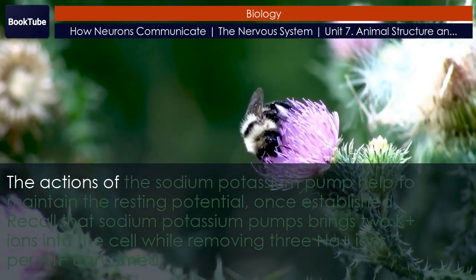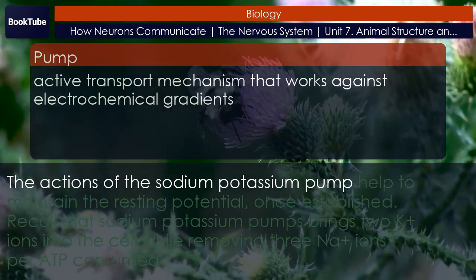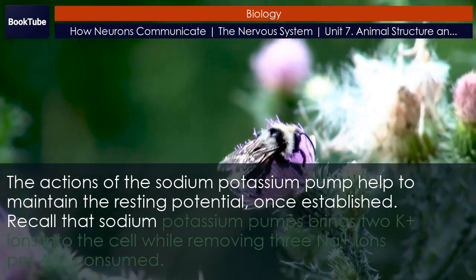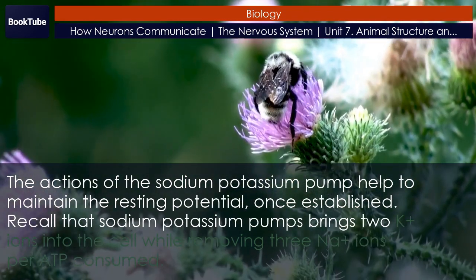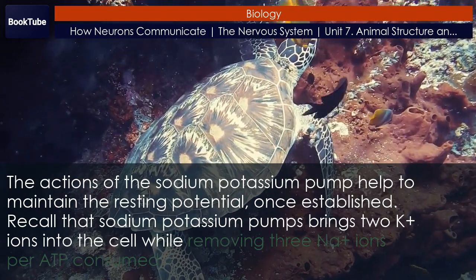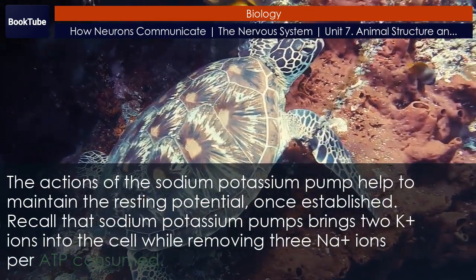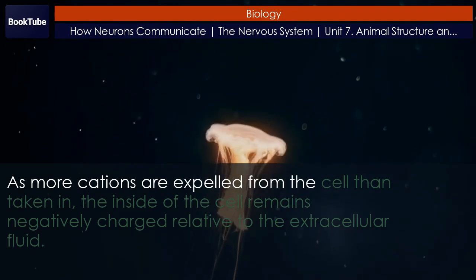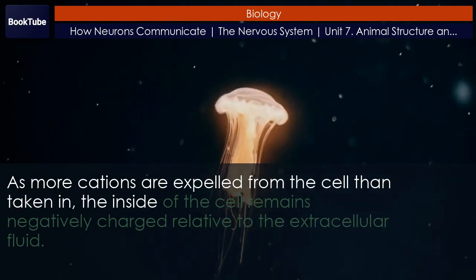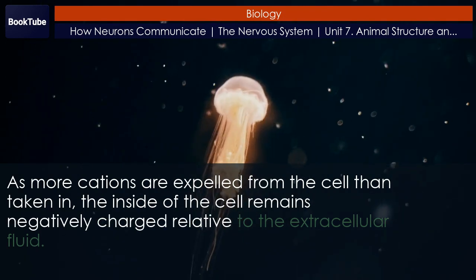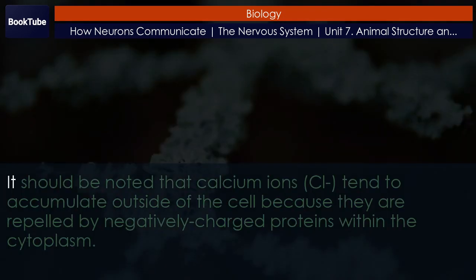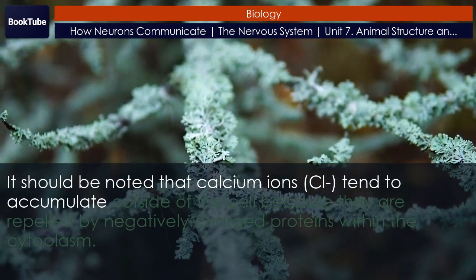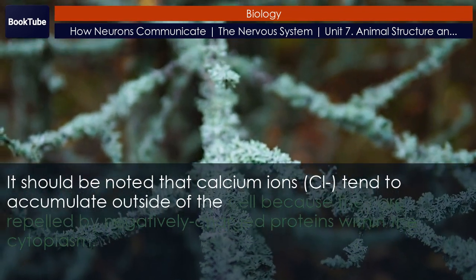The actions of the sodium-potassium pump help to maintain the resting potential. Once established, the sodium-potassium pump brings 2 K+ ions into the cell while removing 3 Na+ ions per ATP consumed. As more cations are expelled from the cell than taken in, the inside of the cell remains negatively charged relative to the extracellular fluid. It should be noted that calcium ions tend to accumulate outside of the cell because they are repelled by negatively charged proteins within the cytoplasm.